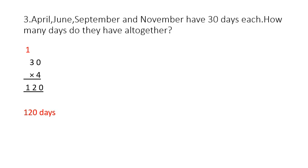Question 3. April, June, September and November have 30 days each. How many days do they have altogether? Children, here 4 months are given and each month has 30 days. Here you have to find out the total number of days. We will multiply 30 by 4.